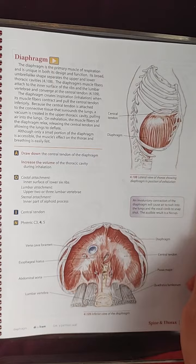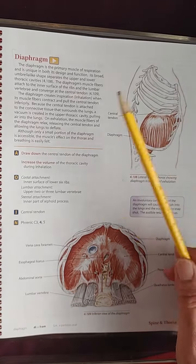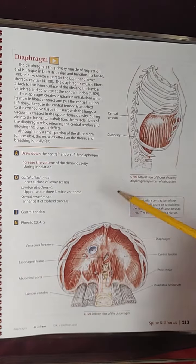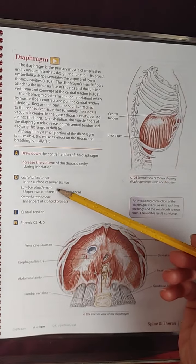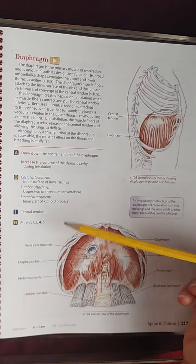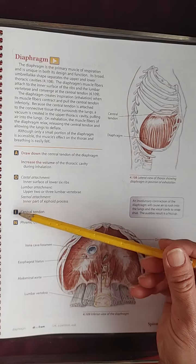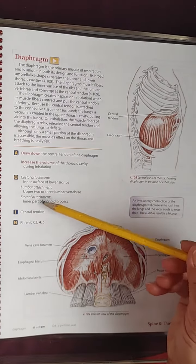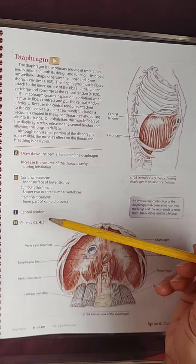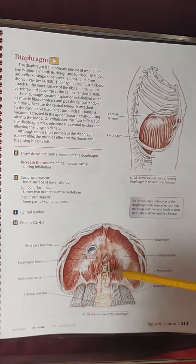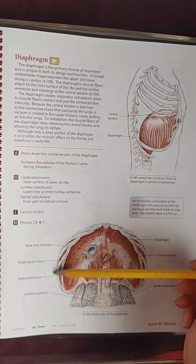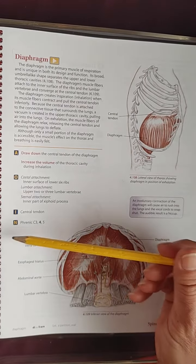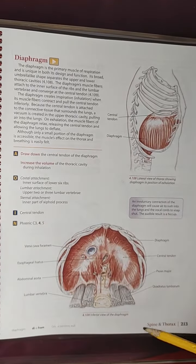During inhalation, the rib moves outward. The origin has two attachments: the costal attachment is the inner surface of the lower six ribs, and the lumbar attachment is the upper two or three lumbar vertebrae. The sternal attachment is the inner part of the xiphoid process, as seen in the image.